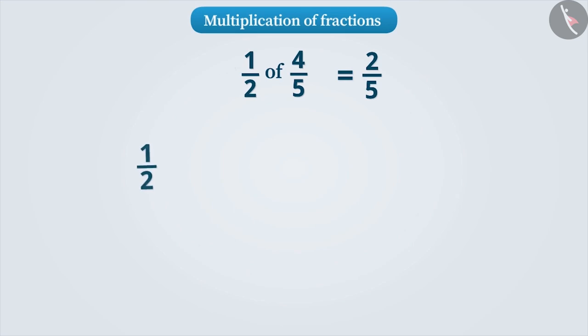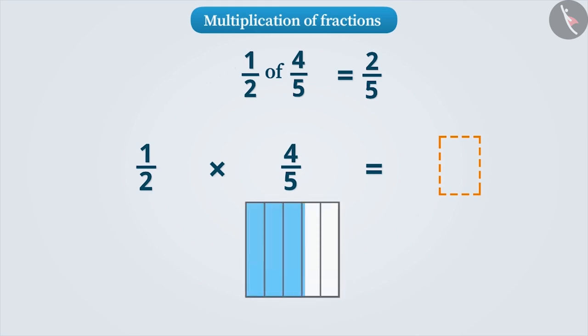We can also find this by multiplying half and 4 by 5. We shaded 4 of the five parts of a square and denoted the fraction 4 by 5. Similarly, we will represent half in the same way.